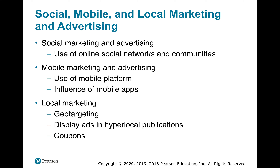Social marketing and advertising is the use of online social networks and communities. Mobile marketing and advertising involves the use of mobile platforms and apps. Local marketing includes geo-targeting display ads in hyper-local publications and coupons. Geo-targeting is pretty interesting — if you have your location setting on your cell phone, they can send you different ads. For example, if you're at a car dealership looking at a car, financial institutions might send you messages about pre-approved auto loans at 3%, and you'll see ads for local dealerships and financing options.